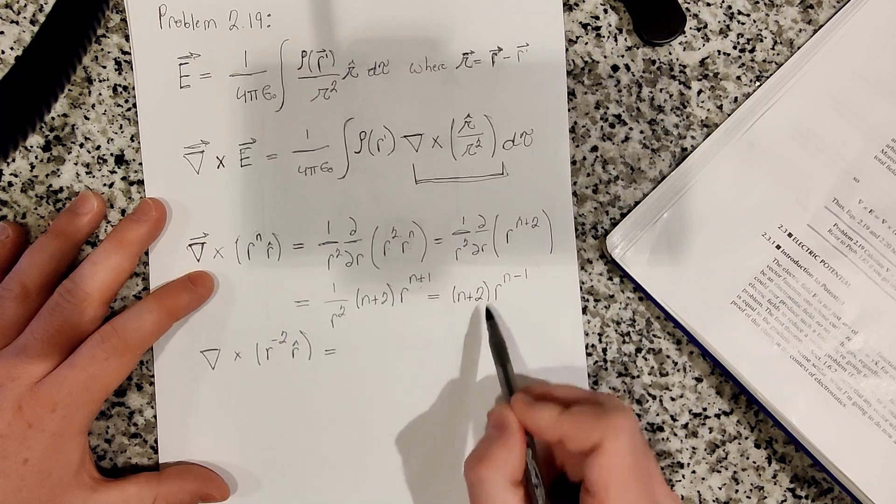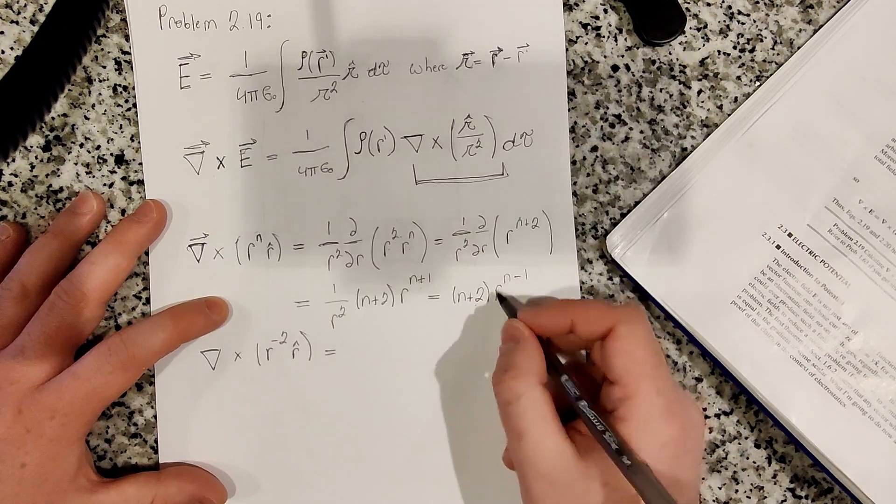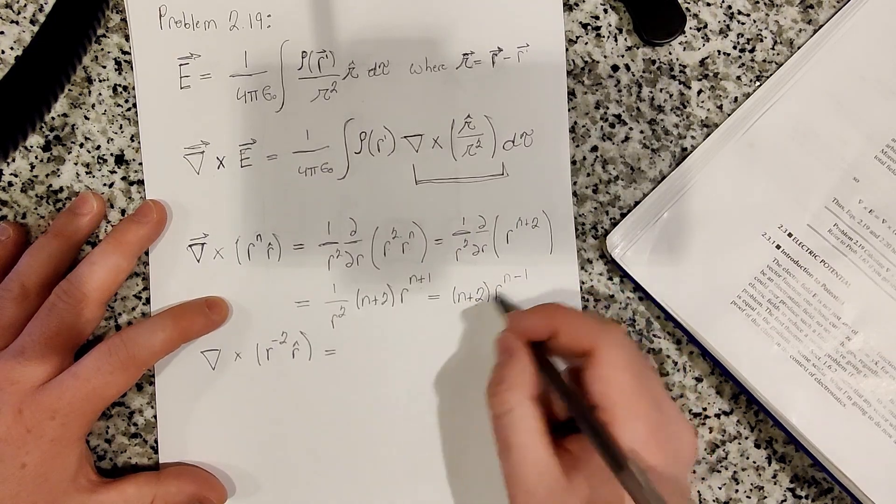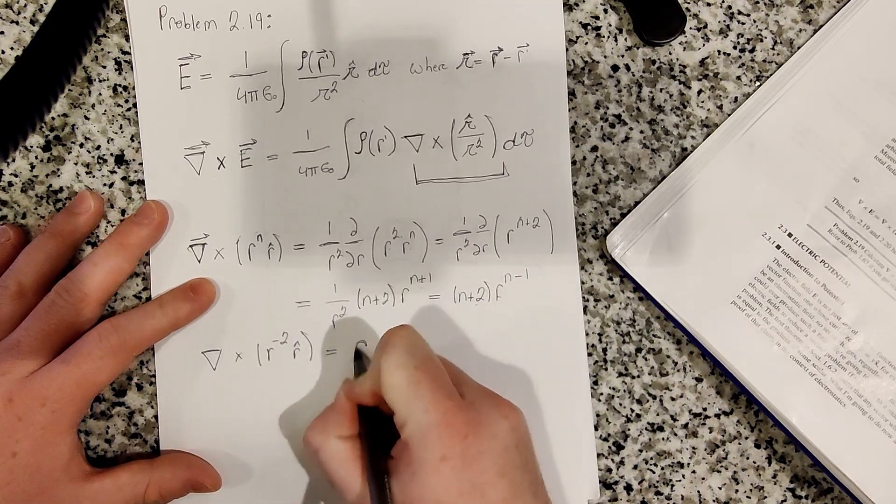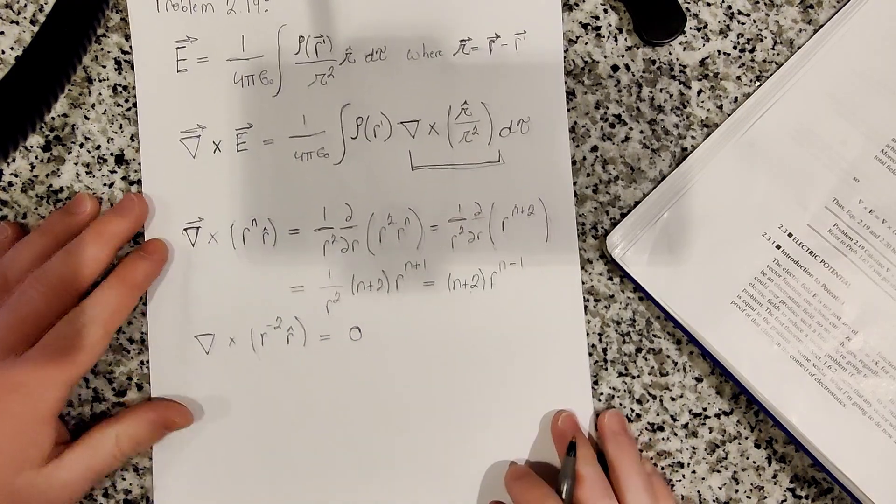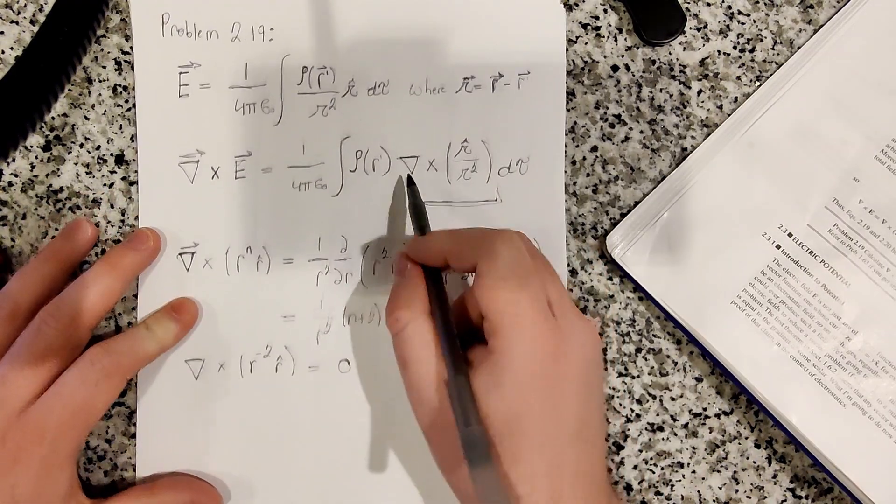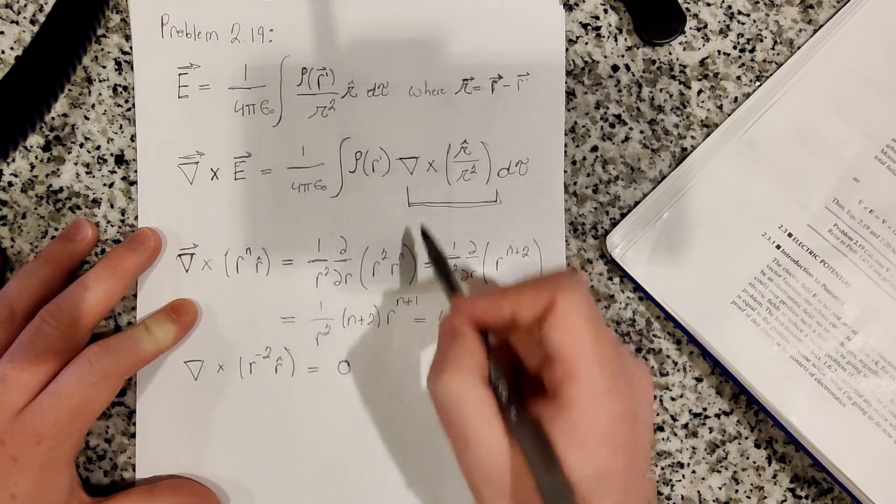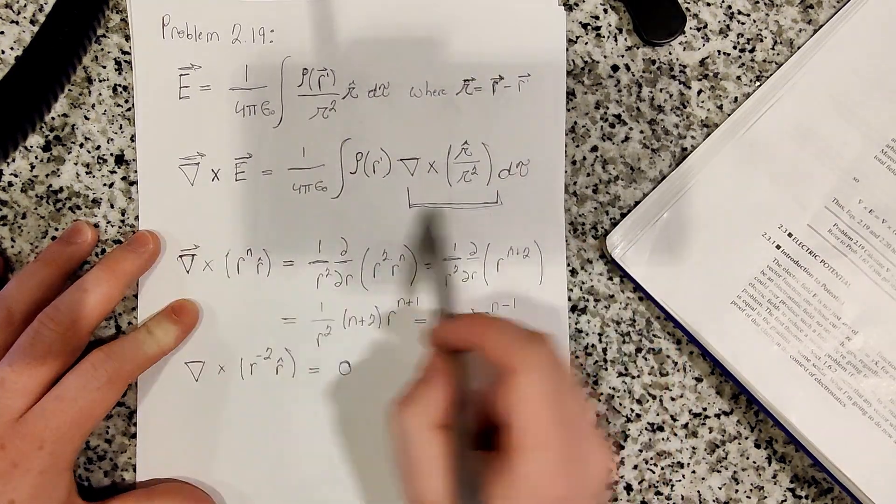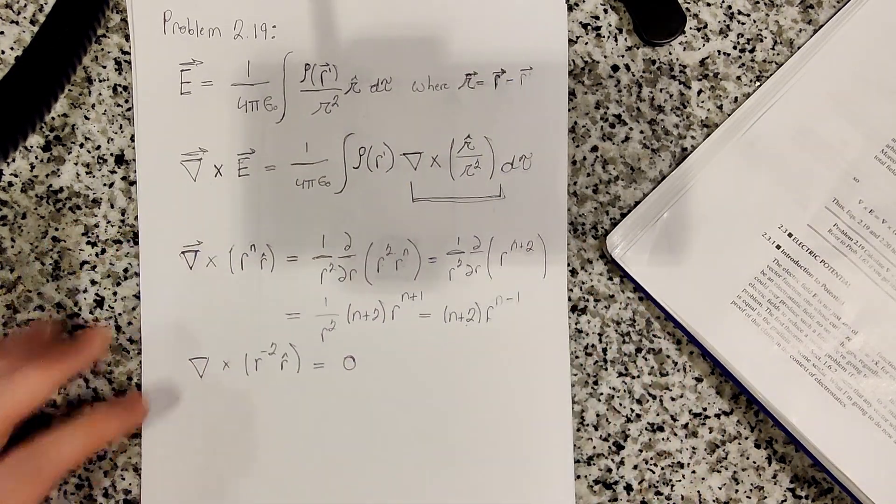So minus 2 plus 2 becomes 0. So we have 0 times r to the n minus 1, but 0 times anything is 0. So we get 0, which tells us then that this term in the equation is 0, which then tells us that the curl of the electric field is 0.